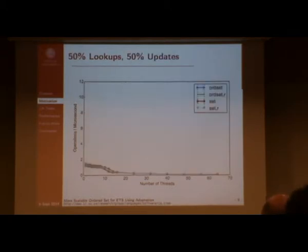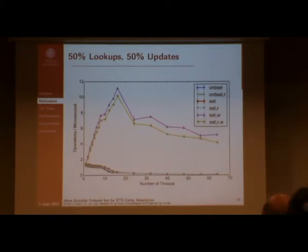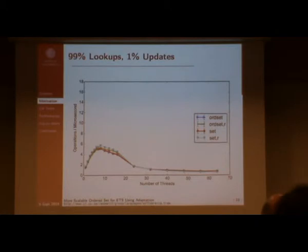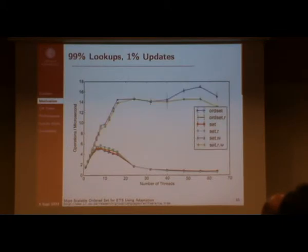In the mixed case with 50% reads and the rest update operations, everything without fine-grained locking doesn't scale at all. With fine-grained locking it's much better. Adding even more read operations — 99% reads and only 1% updates — still doesn't scale at all without fine-grained locking. We even see a slowdown with many threads for all alternatives without fine-grained locking. Using fine-grained locking, performance is much better.